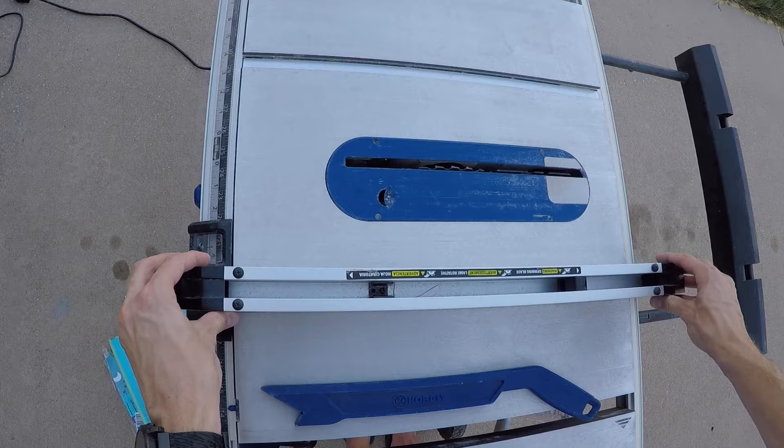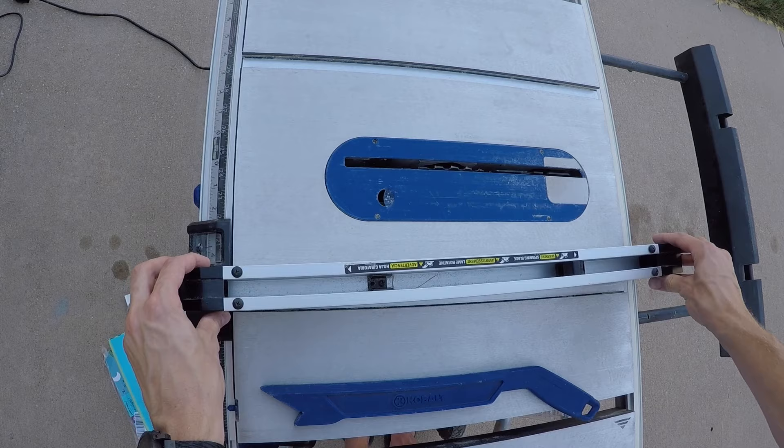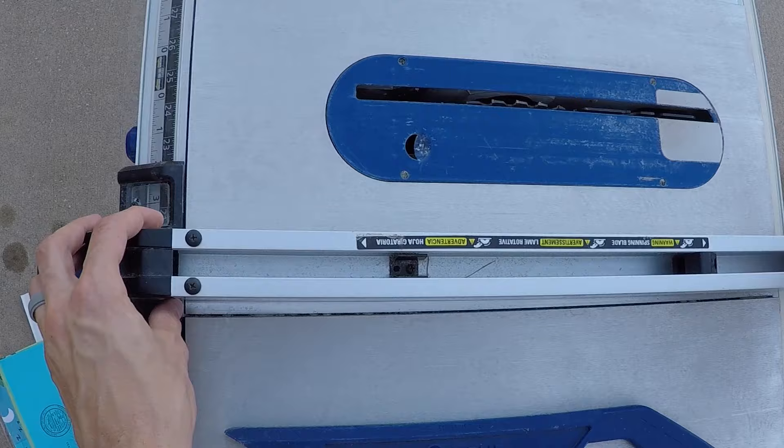Quick hot tip: if your table saw fence is hot garbage like mine is, if you line it up with something that is known to be straight on the table and then lock it in, you can then move it along the rails and it should be relatively parallel with the blade.